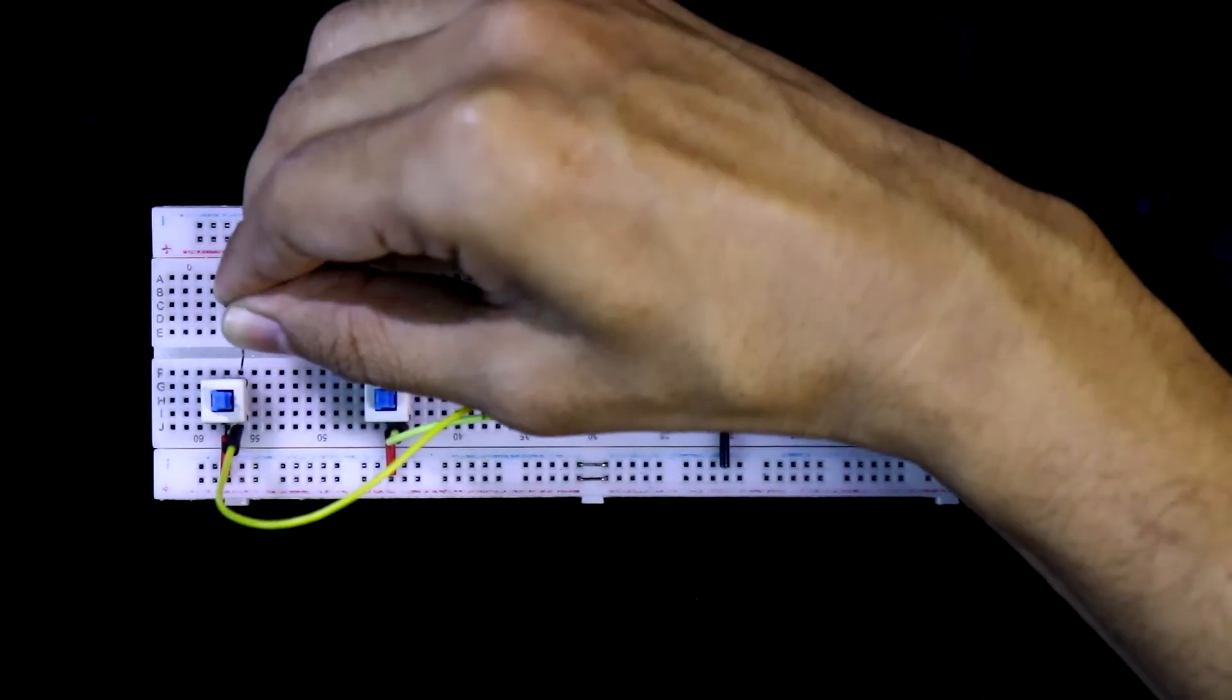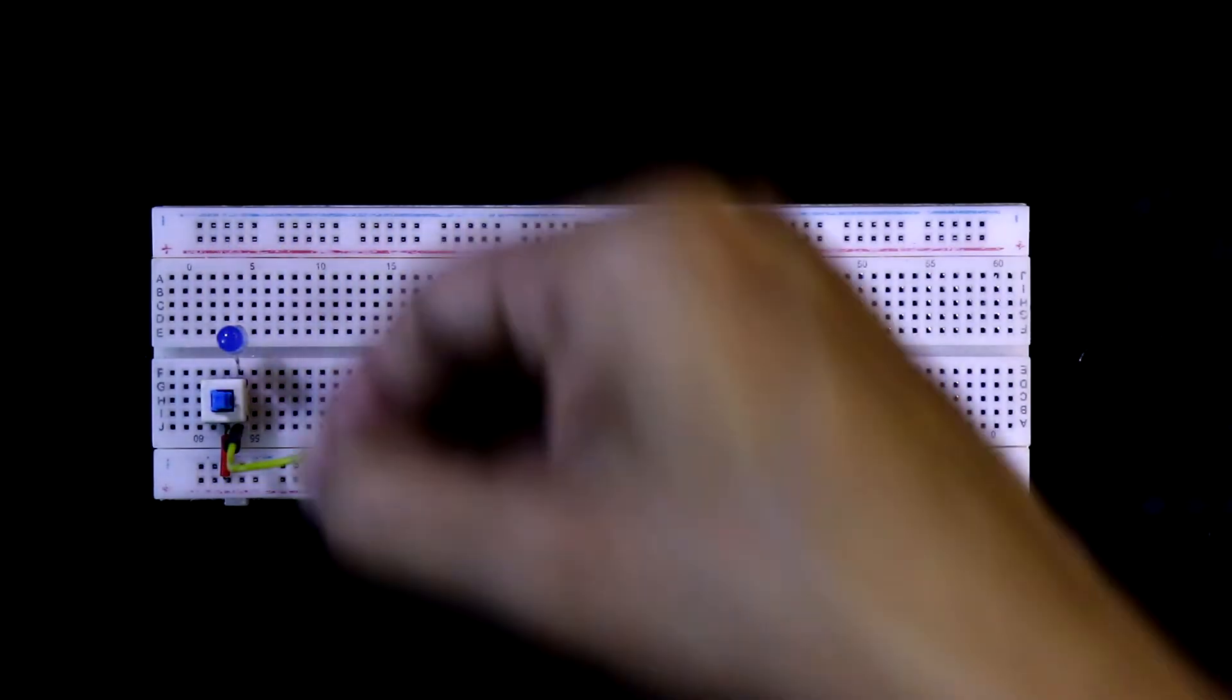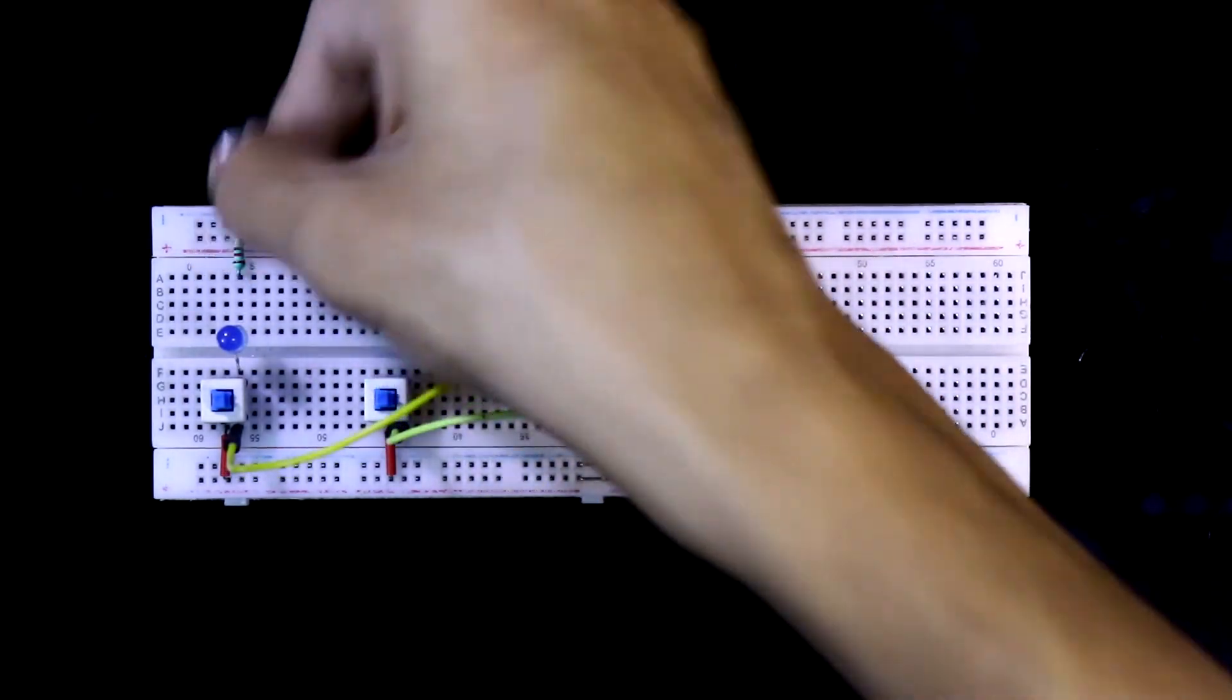Positive pin is connected with the switch and other pin, that is the negative pin, is connected with negative rail.